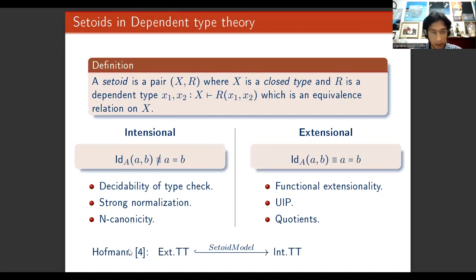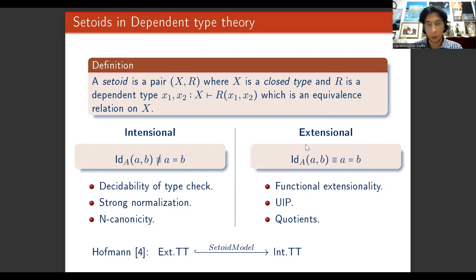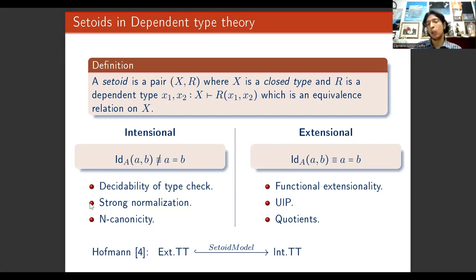Setoids have been widely studied in literature, in particular by Hofmann in his PhD thesis, who proved that they play a fundamental role in the interplay between extensional and intentional type theory. A type theory is called extensional when the notion of propositional equality given by the identity type coincides with the judgmental equality; otherwise it is called intentional.